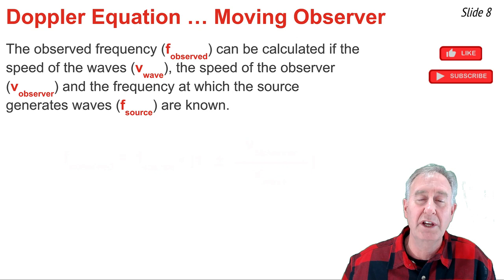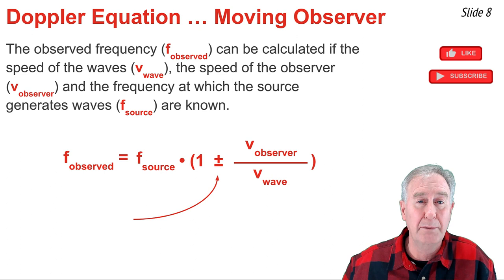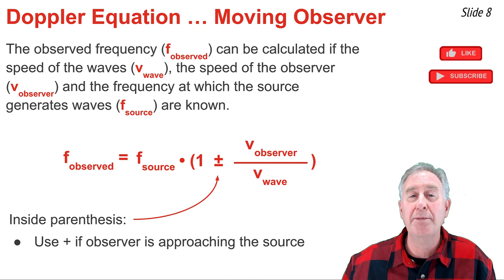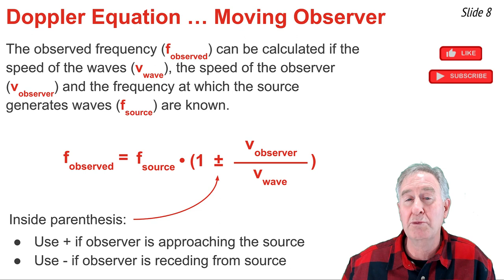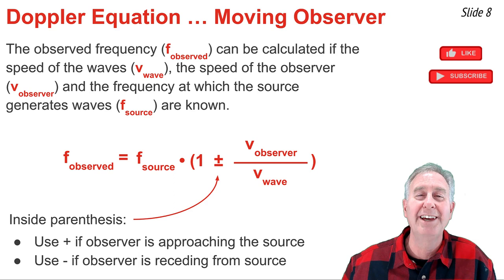Here's the equation for a moving observer. On the right side there's a plus or minus sign inside the parentheses. We use a plus sign if the observer is approaching the source — that makes everything inside the parentheses greater than 1, causing the observed frequency to be greater than the source frequency. We use a minus sign if the observer is moving away from the source, making everything inside the parentheses less than 1, so the observed frequency is less than the source frequency.